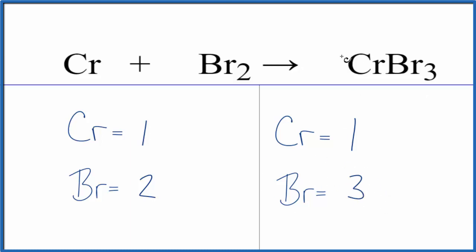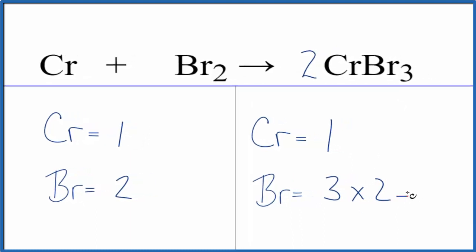So whenever I have an odd number like this, I like to multiply by two to get it to be even. Three times two, that'll give me six, and then one times the two.